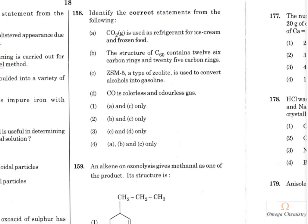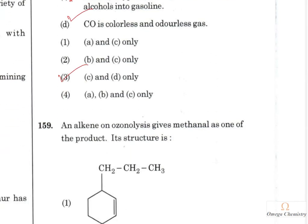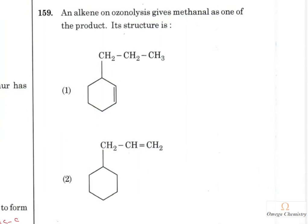Question 158: Identify the correct statements. CO₂ as a refrigerant for ice cream — wrong, because solid CO₂ (dry ice) is used, not gaseous CO₂. The structure of C₆₀ contains 12 five-membered rings and 26 six-membered rings (not 6 and 25). ZSM-5 is a zeolite. Carbon monoxide is a colorless and odorless gas. Only C and D are correct, so option 3 is the right answer.